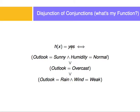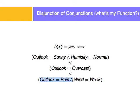The hypothesis that I will play tennis is yes — so the hypothesis that I will actually play tennis is given by the solution to this statement. In other words, the hypothesis that I will play tennis is yes if and only if the outlook is sunny and the humidity is normal, or if the outlook is overcast, or if the outlook is rainy and the wind is weak. All of these conditions will make me play tennis.